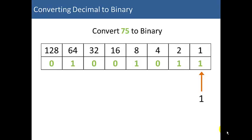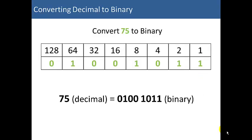After that, we have 0 left. So, we're done with our conversion. We've converted 75 decimal to 01001011 binary.